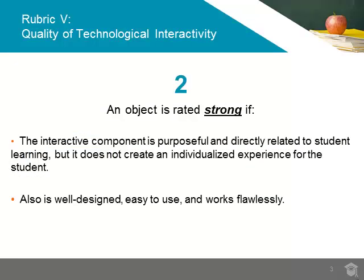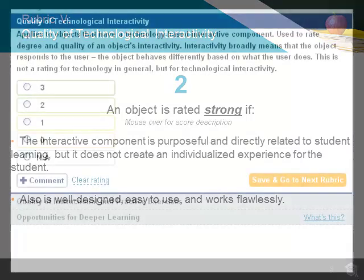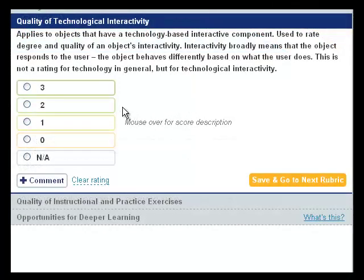An object is rated strong, a 2 rating, if interactivity is purposeful and directly related to student learning, but it does not create an individualized experience for the student. Just as in a superior rating, strong objects should also be well designed, easy to use, and work flawlessly.